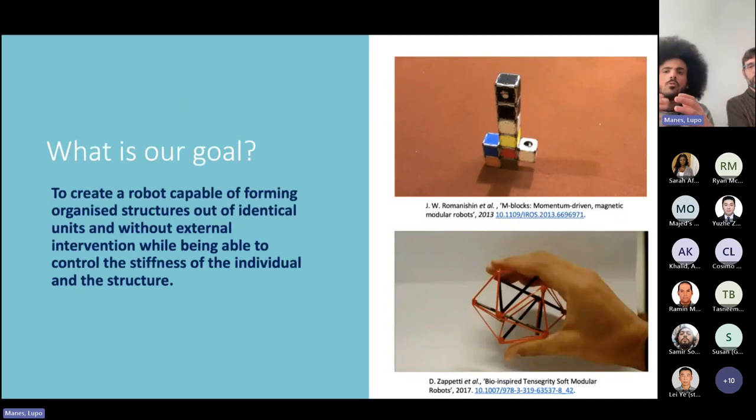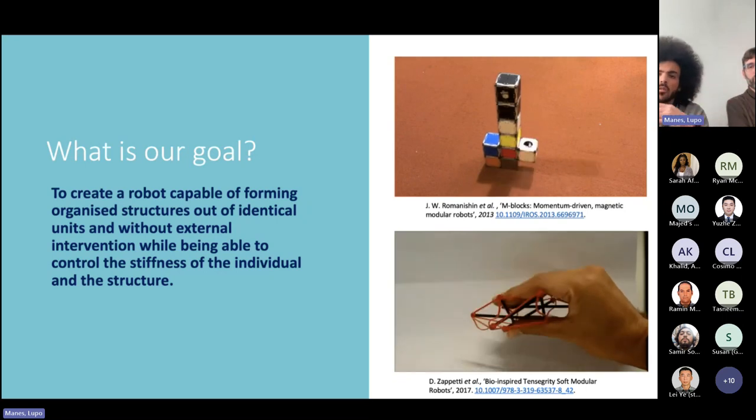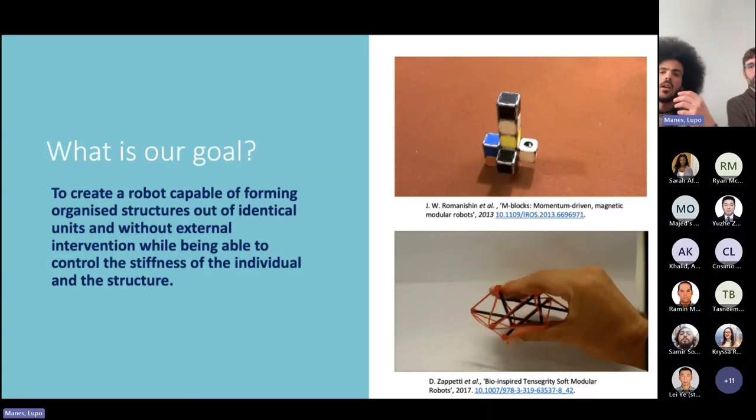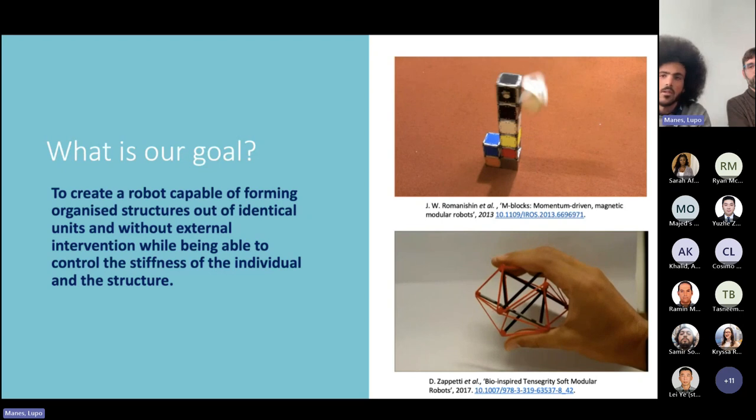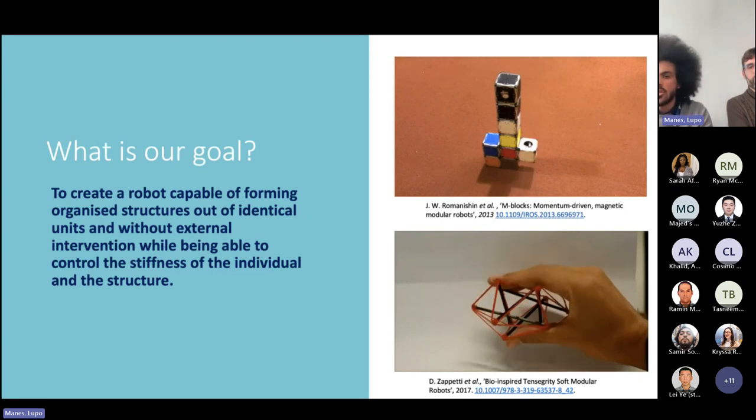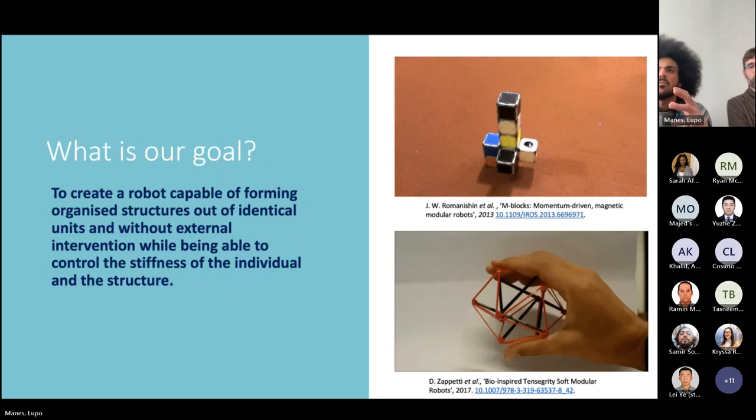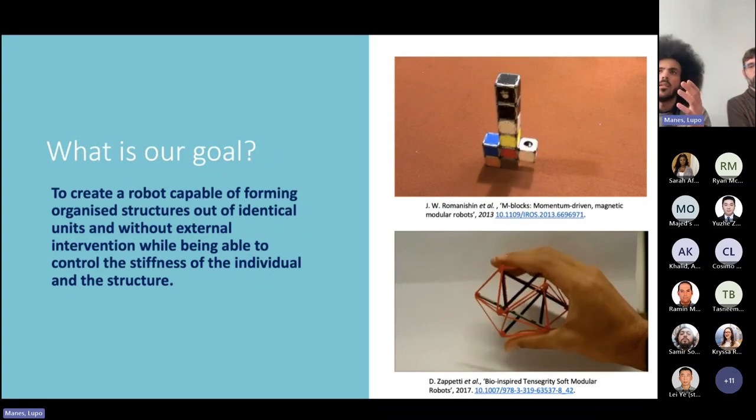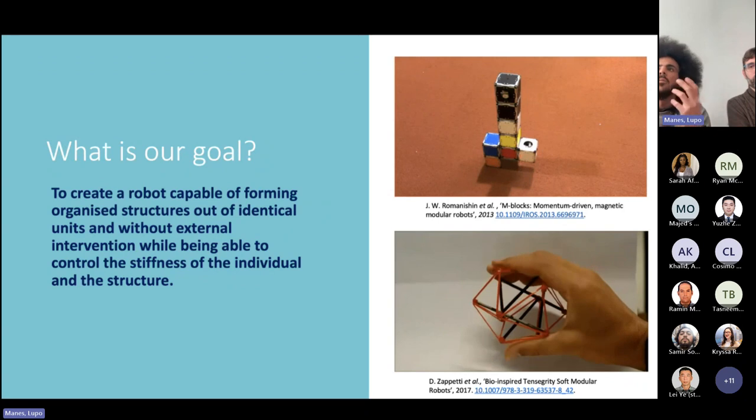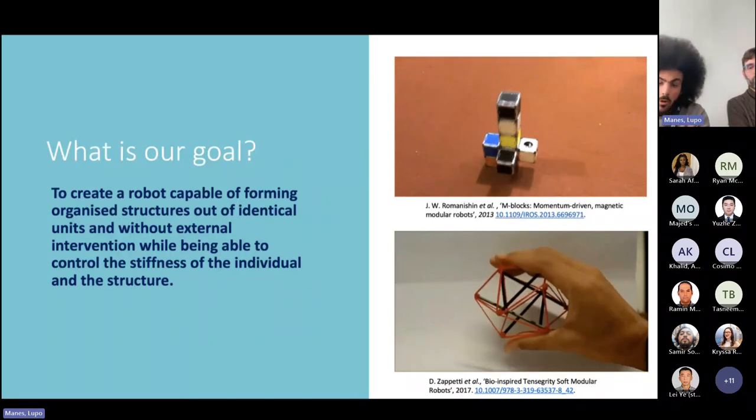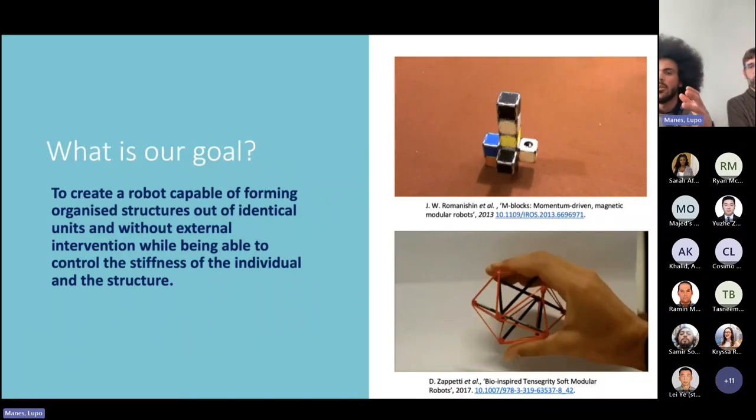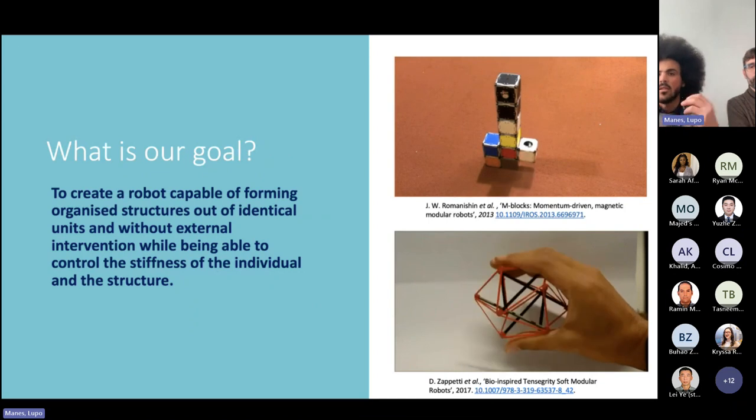In literature, you can find a lot of systems that can do either one of these two. They can either reconfigure, like you can see in the video on the top, or they can change their stiffness, like in the example below. But it's not yet been done by any research group that we're aware of to have a system that is capable of both reconfiguring in space and changing the stiffness.